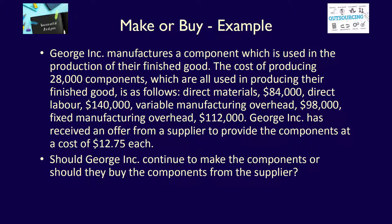George Inc. manufactures a component which is used in the production of their finished goods. The cost of producing 28,000 components, which are all used in producing their finished goods, is as follows: direct materials $84,000, direct labor $140,000, variable manufacturing overhead $98,000, and fixed manufacturing overhead $112,000.